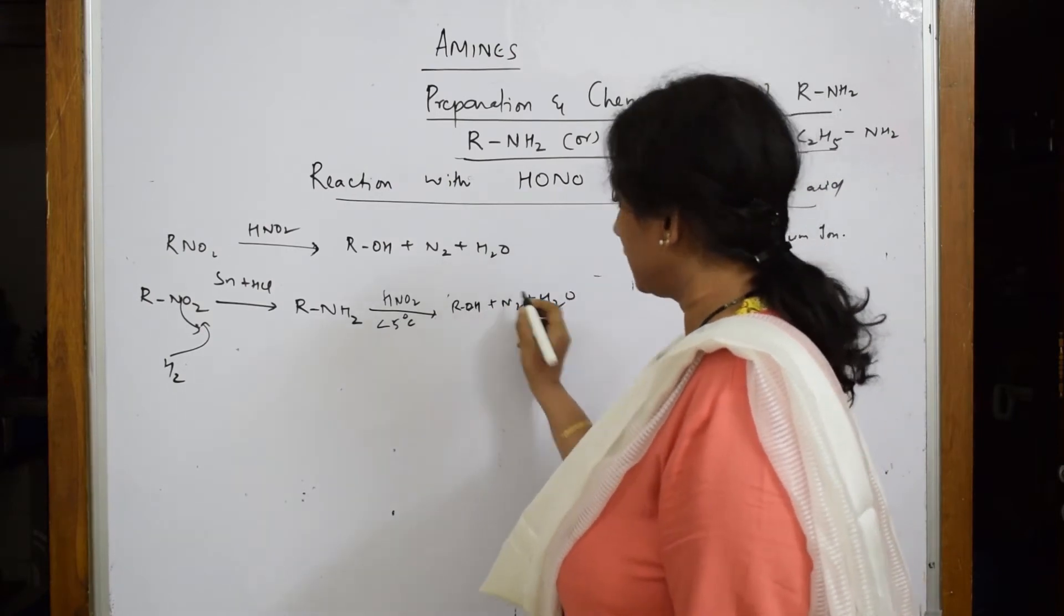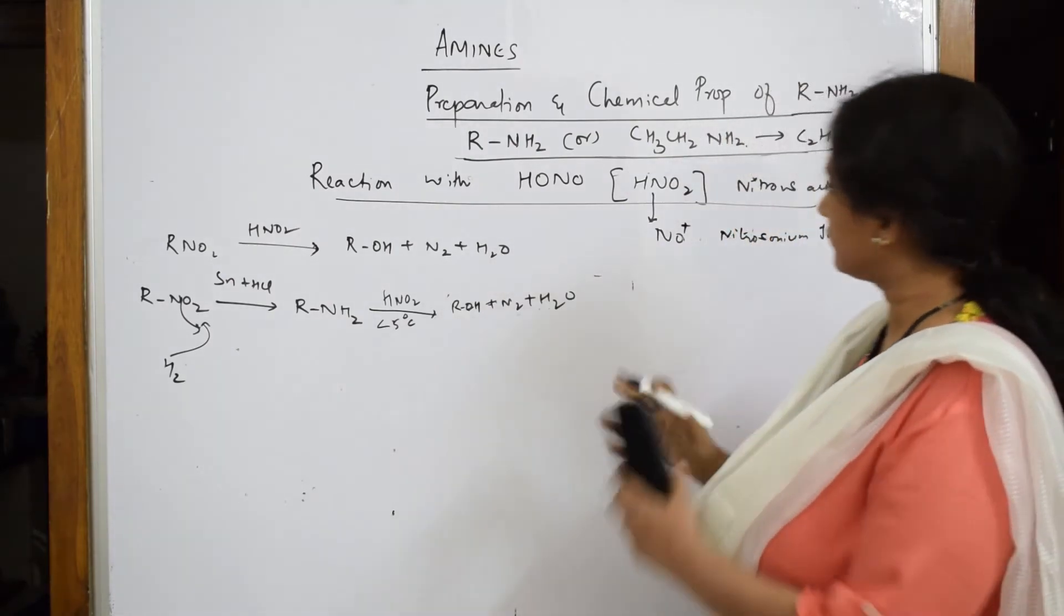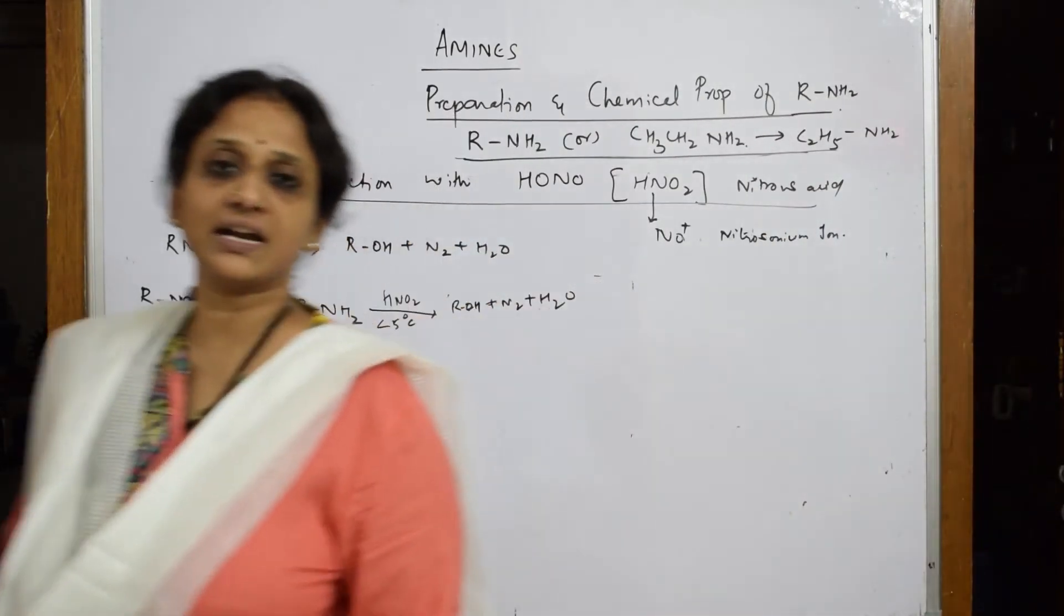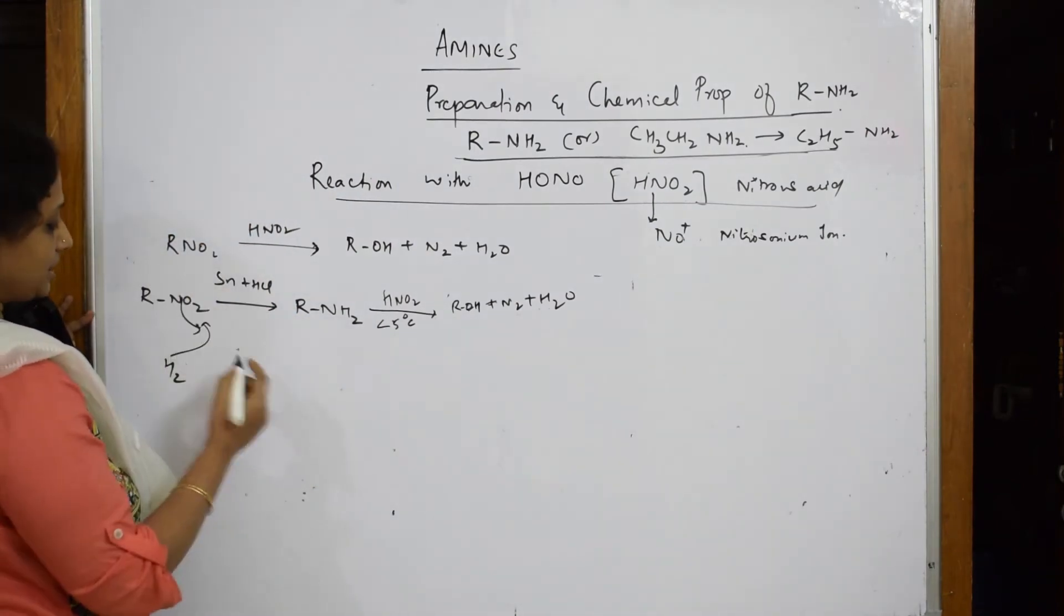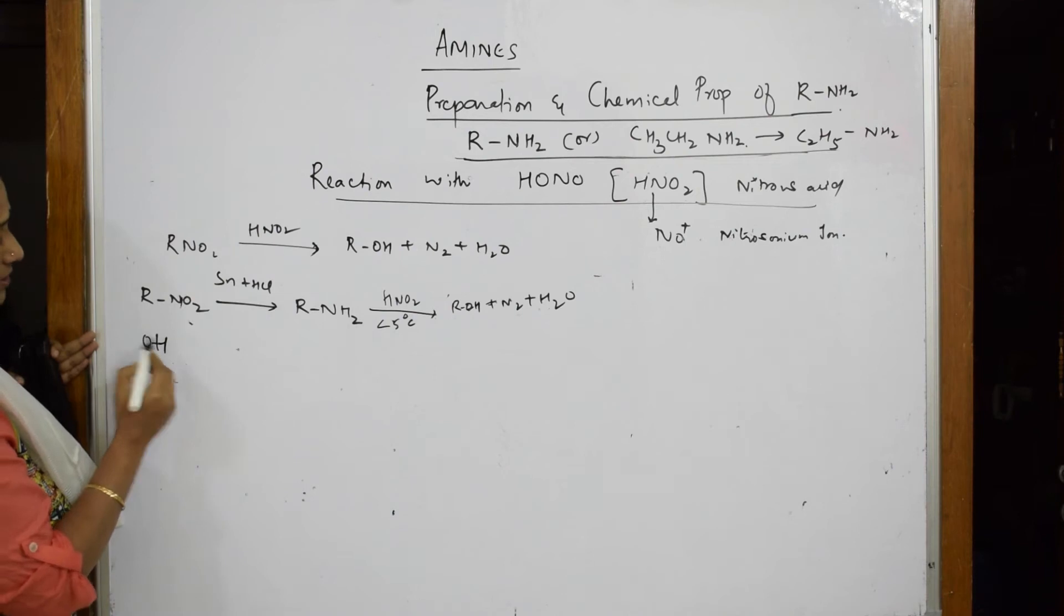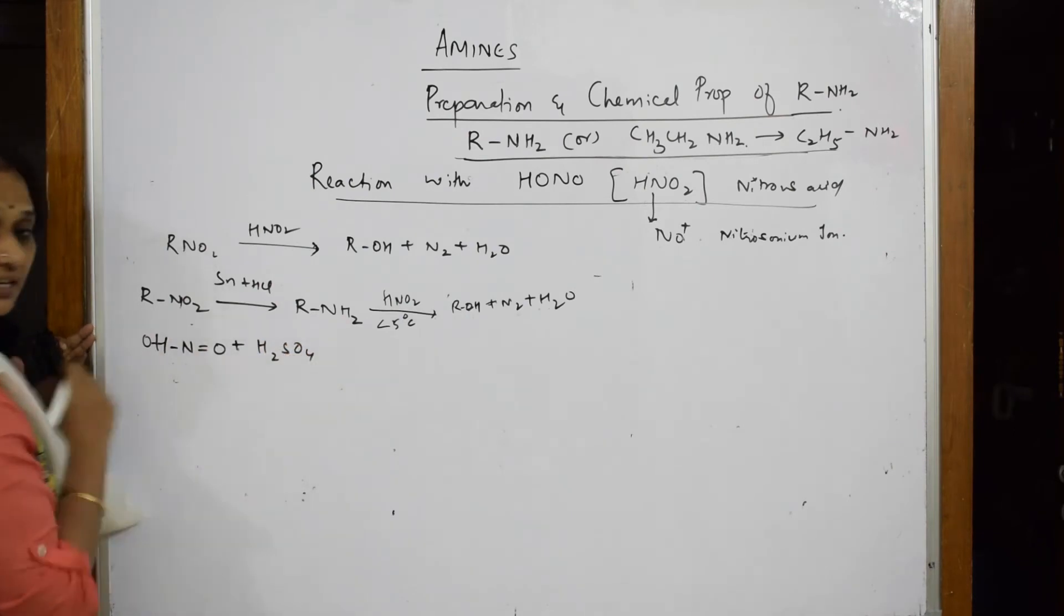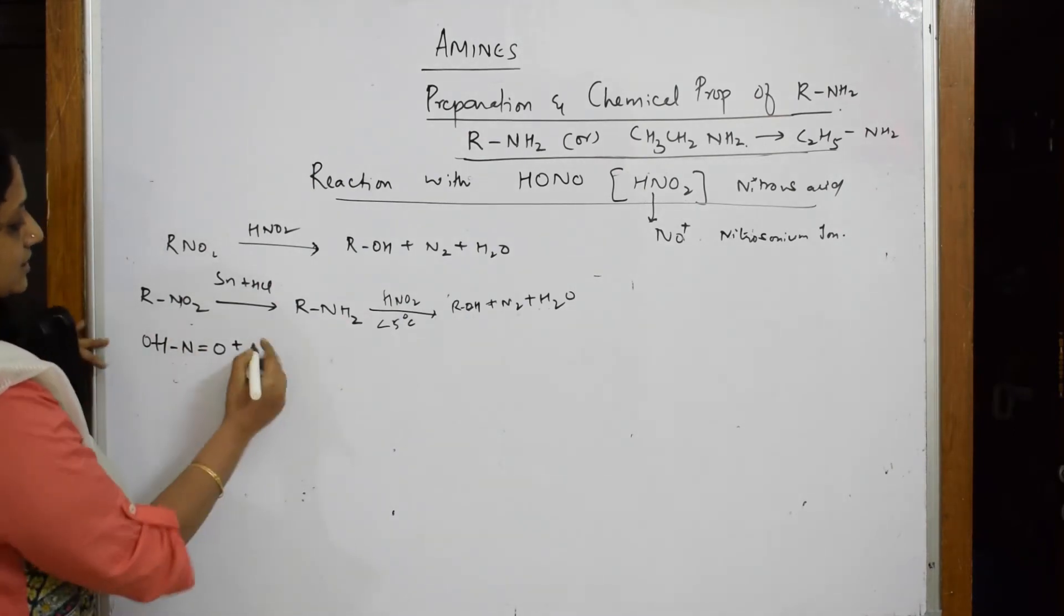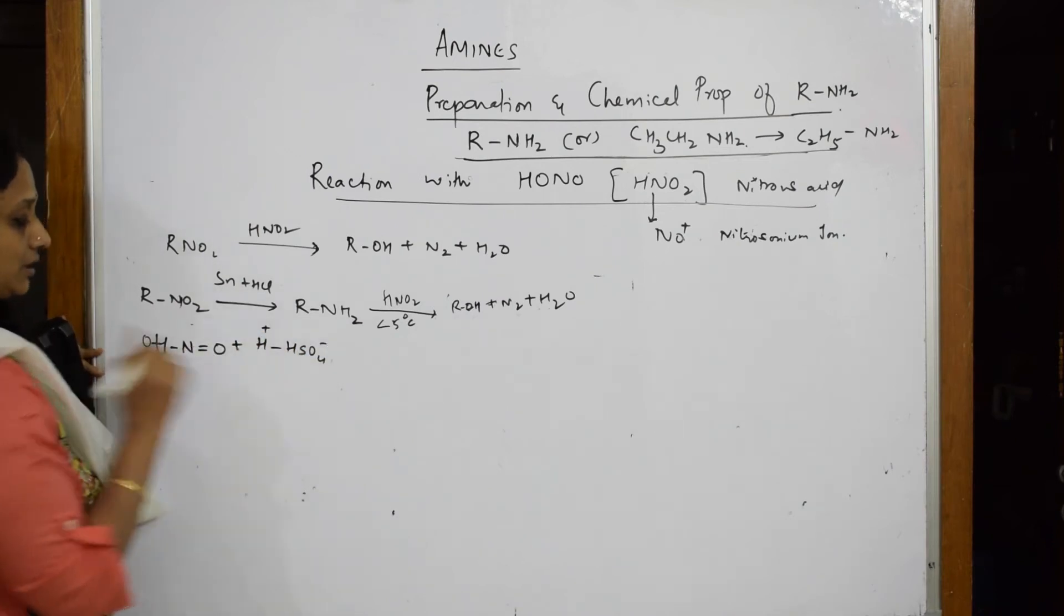First important thing is your nitrosonium. Whenever you're adding nitrous acid in acidic medium, what happens? This nitrous acid, let me write like this: N-OH with double bond O. In the presence of acidic medium, sulfuric acid, I'm going to write sulfuric acid as H+ and HSO4-. First important thing, let us see the structure - counting the electrons.